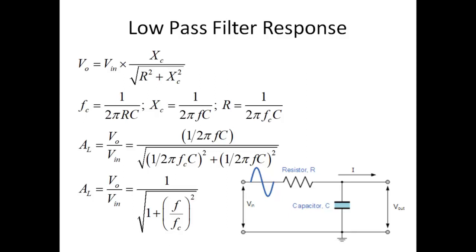To find the low-pass filter response in terms of voltage, V_output is the voltage developed across the capacitor. Applying the voltage divider rule with Vin across a resistor R and capacitor Xc in series, V_output = Vin × Xc / √(R² + Xc²). This is the voltage divider formula for this particular circuit.